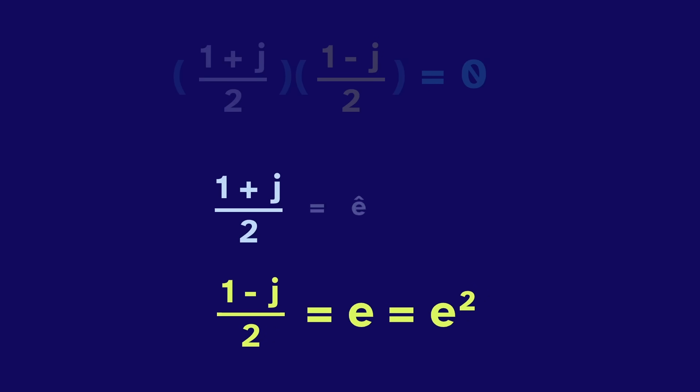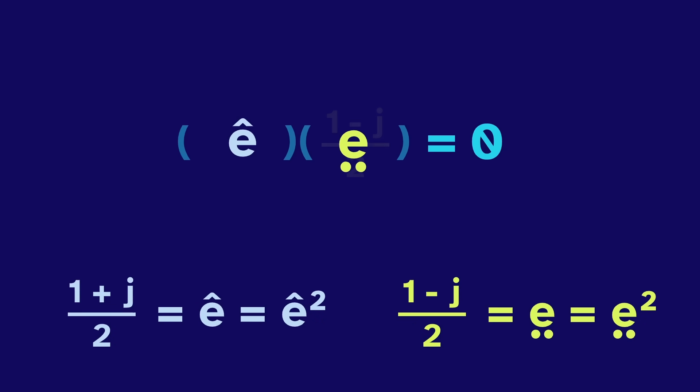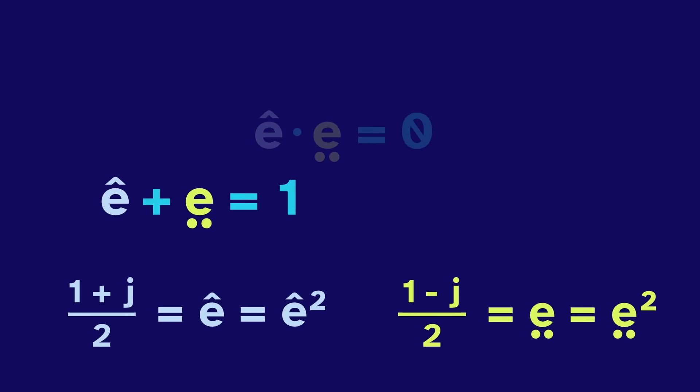And the other number, e hat, also squares to itself. But I think it's unfair that this one has a hat, so we'll give the first e some shoes. We have that e hat and e shoes multiply to zero. And also, e hat plus e shoes equals 1, and e hat minus e shoes equals j.